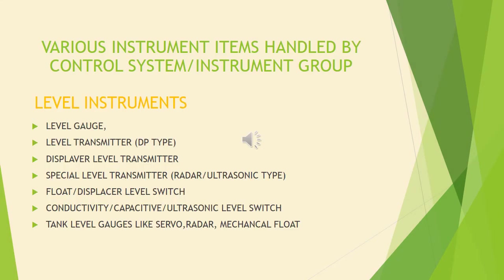Level instruments used in industries include level gauge, level transmitter (DP type), displacer level transmitter, and special level transmitters like radar and ultrasonic types. Also included are float and displacer level switches, conductivity, capacitive, and ultrasonic level switches, and tank level gauges like servo, radar, and mechanical float types.